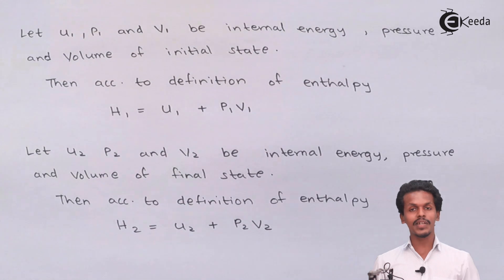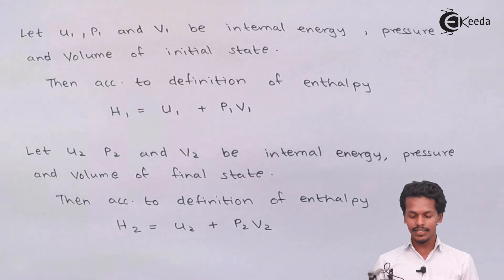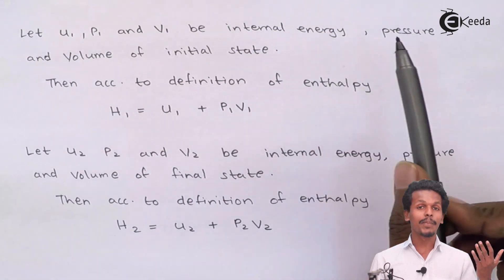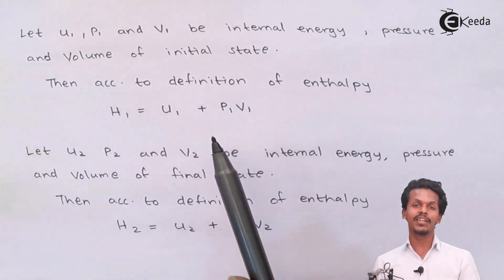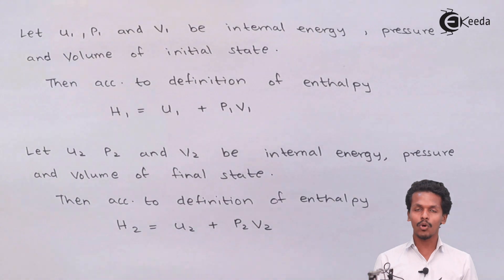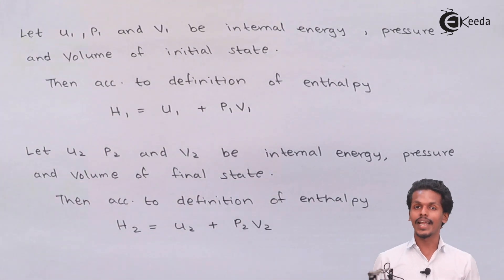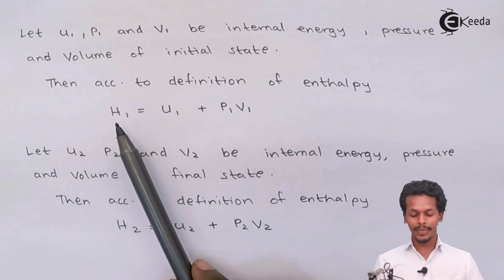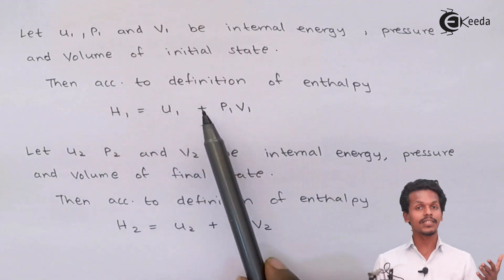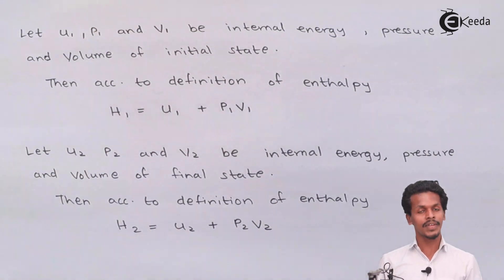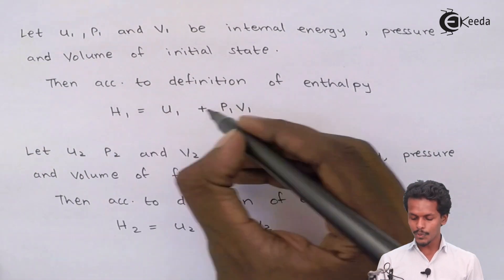Since enthalpy is related to internal energy as well as pressure and volume, let U1, P1, and V1 be the internal energy, pressure, and volume of the initial state. According to the definition of enthalpy, H1 equals U1 plus P1 V1. This is the equation for the initial state of enthalpy. Let this be equation two.